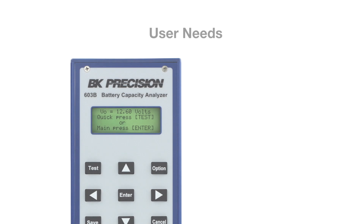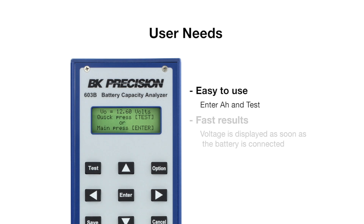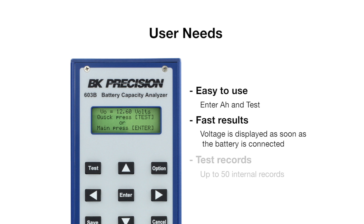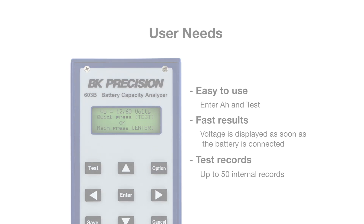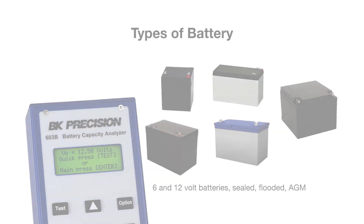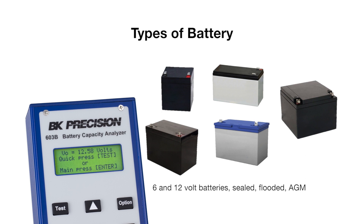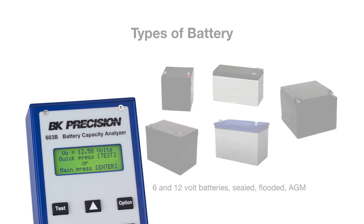This industry segment requires a tool that is easy to use, provides fast results, and can document the test process to meet record keeping requirements. The 603B can test 6 and 12 volt lead acid type batteries ranging in size from a few amps to 100 amp hours.